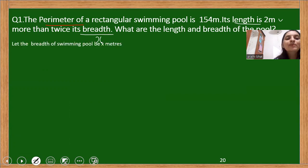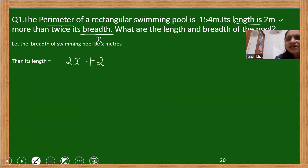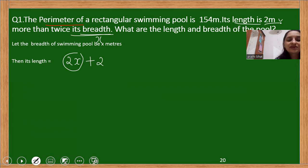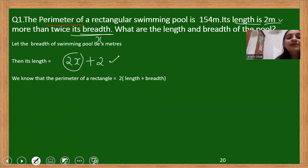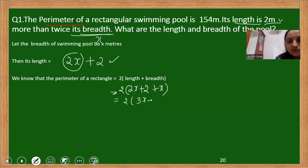Let the breadth of the swimming pool be x meters. Then its length will be twice of x plus 2, that is 2x plus 2. The condition is very clear: twice its breadth plus 2 more meters. So the length will be 2x plus 2. We know the perimeter of a rectangle is 2 times length plus breadth. Substituting, length is 2x plus 2 and breadth is x. After simplification, we get 2 into 3x plus 2, giving us 6x plus 4. The perimeter is given as 154.